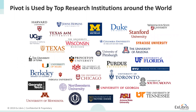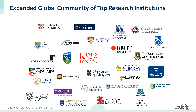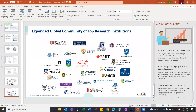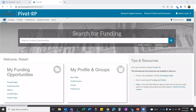These are some of the better-known organizations and institutions within North America that are currently active users of Pivot RP. Their researchers use the tool to discover funding opportunities and potential collaborators. And globally, there are well-known institutions from across the world using the same tool. So you are in good company, and we hope to continue expanding the universe of folks using Pivot.